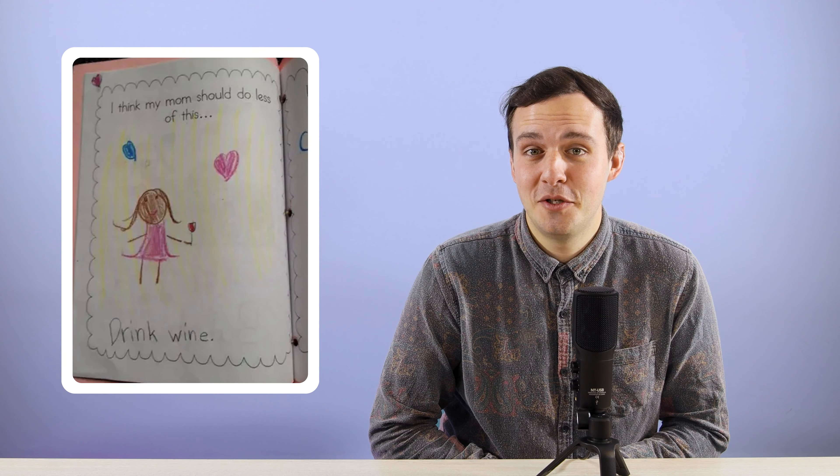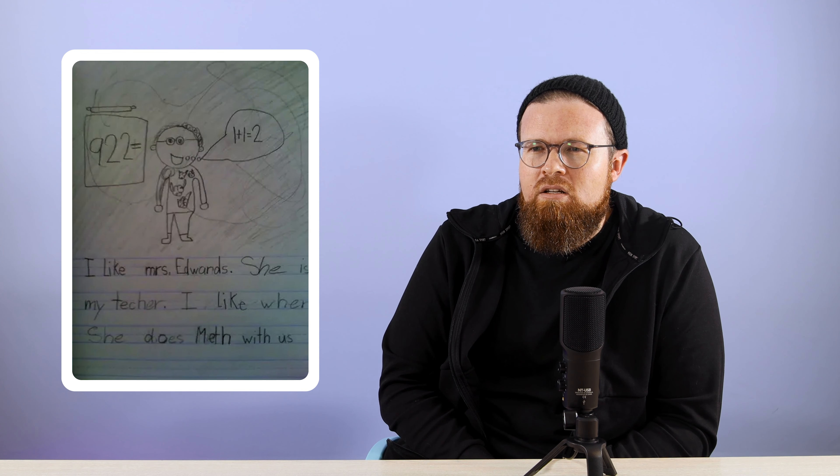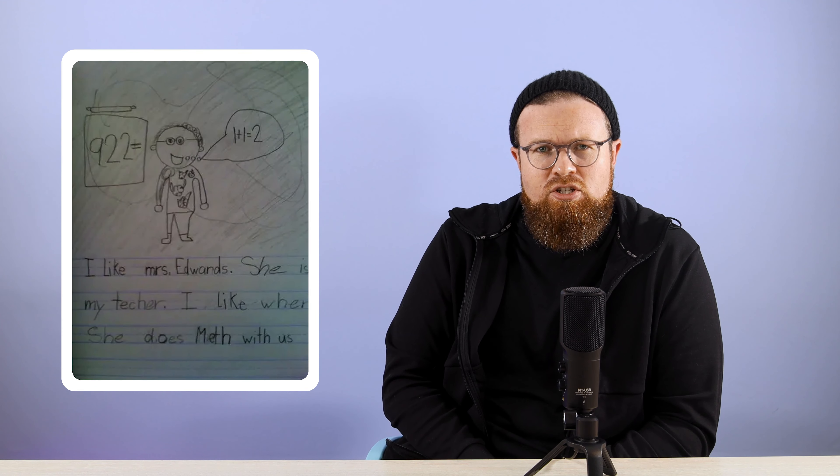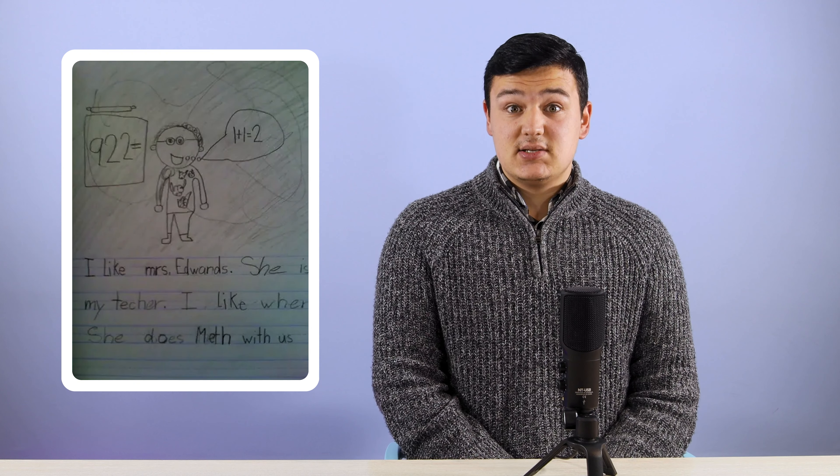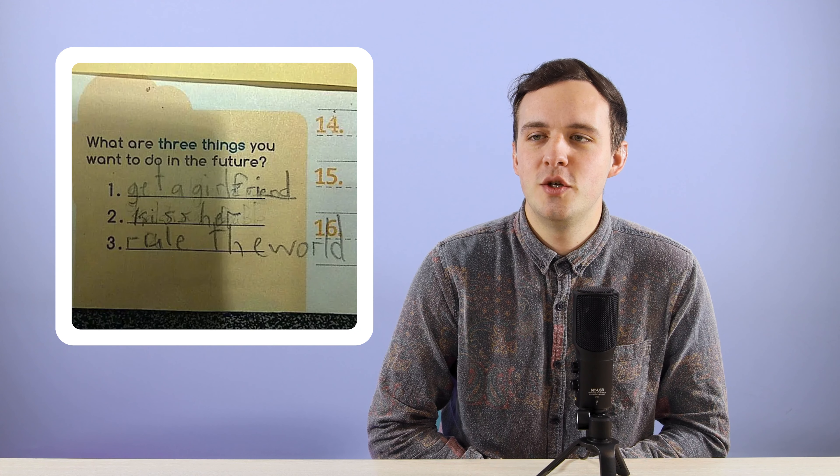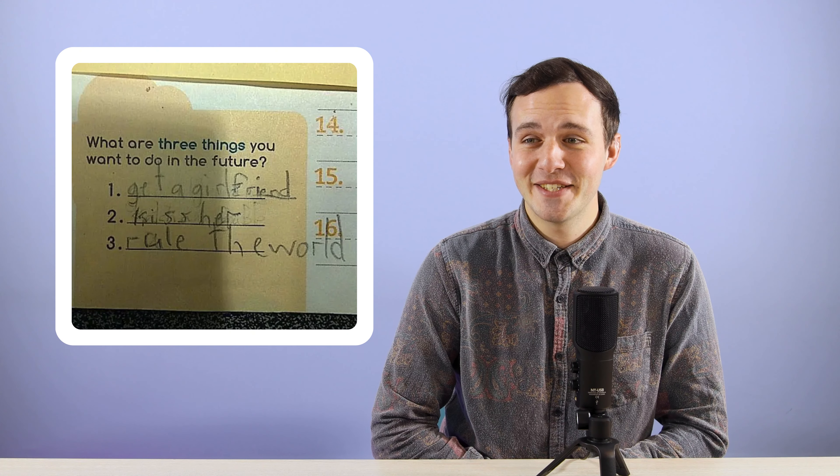I like Mrs. Edwards, she is my teacher. I like when she does meth with us. Somebody should probably speak to this teacher. Somebody arrest her please. What are three things you want to do in the future? One, get a girlfriend. Two, kiss her. Three, rule the world. Man that's extreme. I find my girl and then I take over the universe. This kid has ambitions and I like him. Give us a ring if you're looking for a job.